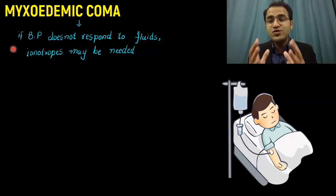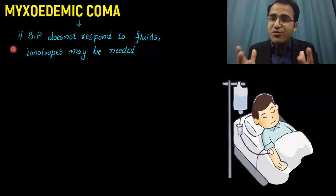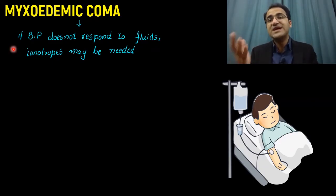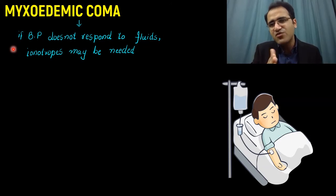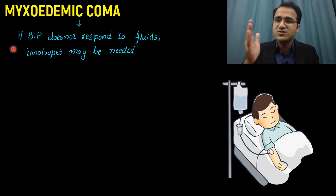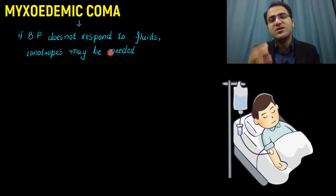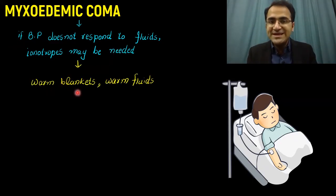Since these patients present with low blood pressure, hypotension, and bradycardia, you need to support blood pressure with fluids. Give slightly warm fluids because these patients already have hypothermia — warm fluids help control their temperature. If blood pressure does not respond to fluids, inotropes to support cardiac output may be required. Warm blankets and warm fluids should be given.